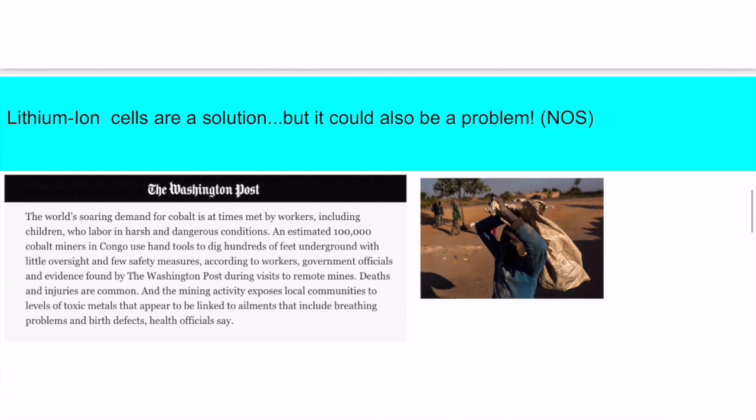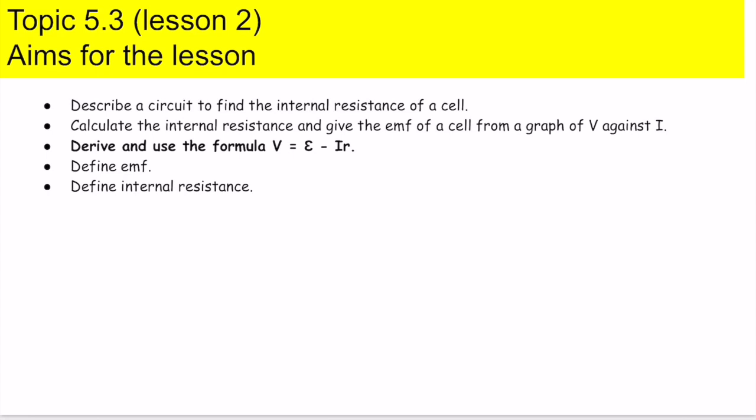So in this second lesson for topic 5.3, we're going to look at the internal resistance of a cell, the electromotive force (EMF), the use of the formula which we're going to derive from a graph, and then a circuit to find the internal resistance. It's a very short and easy unit, just some definitions to look at.